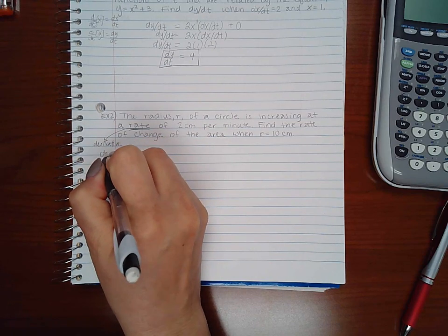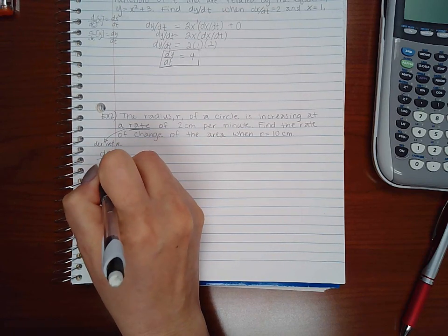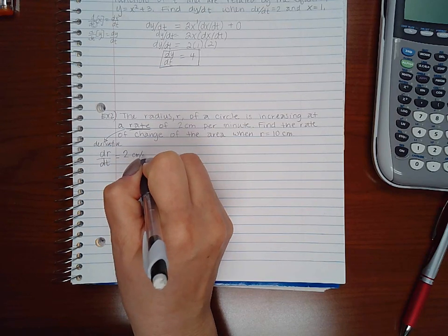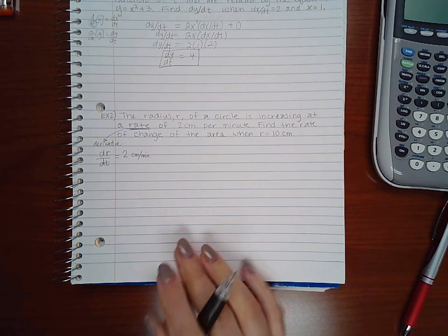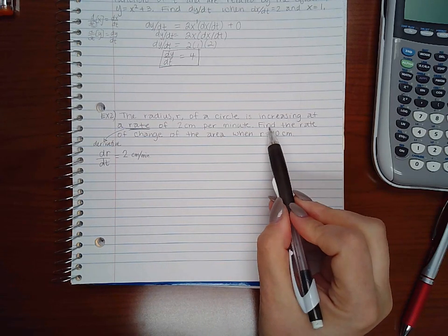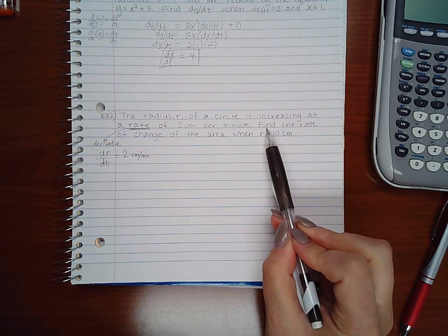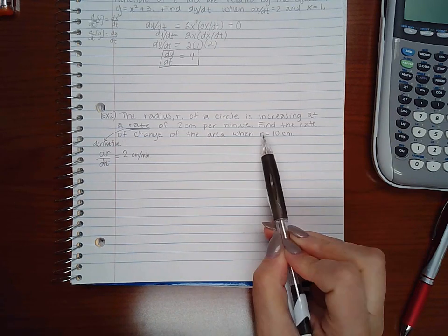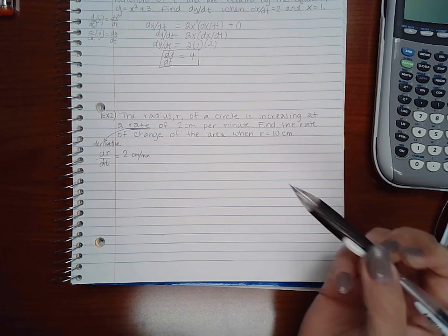So what that means is the derivative of the radius with respect to time is 2 centimeters per minute. That's what the first equation is telling me. The second sentence says find the rate of change of the area when radius is 10 centimeters.